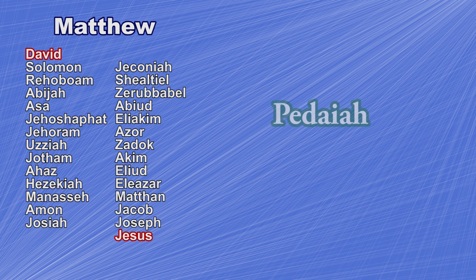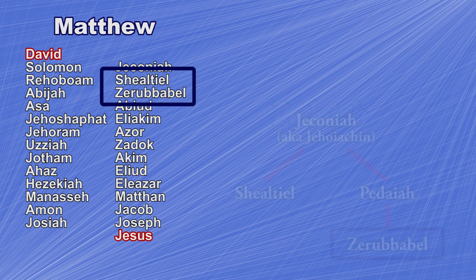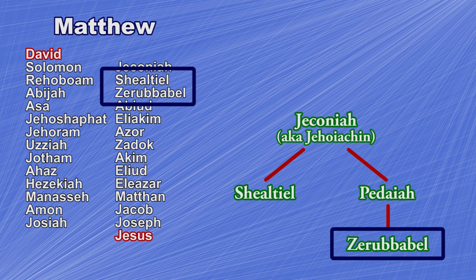There is an additional name missing: Pedaiah. According to 1 Chronicles, Zerubbabel's father is not Shealtiel, but is Pedaiah, Shealtiel's brother.